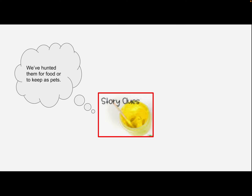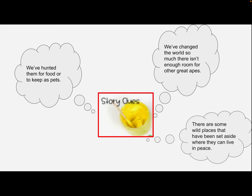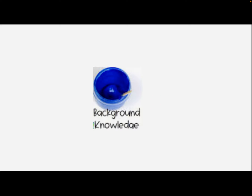So let's think about the story clues the author gave us. The author told us that we've hunted them for food or to keep as pets. The author also tells us we've changed the world so much there isn't enough room for other great apes. But then the author tells us that we've also set aside some wild places where the apes can live in peace. These story clues are telling me that because of human activities, the apes are losing places to live and there aren't as many apes left in the world as there used to be.